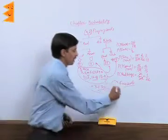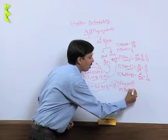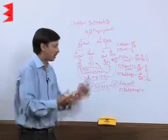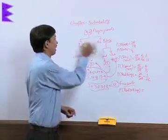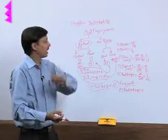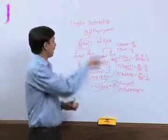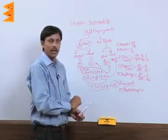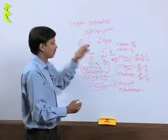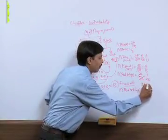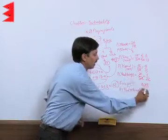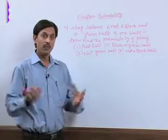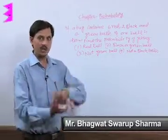If we change the language slightly: what is the probability of getting red OR king? Red or king means we add red cards and kings. There are 26 red cards and 4 kings, but 2 kings are already included in the 26 red cards, so only 2 black kings remain. Favorable events become 26 plus 2 equals 28, giving 28 upon 52.